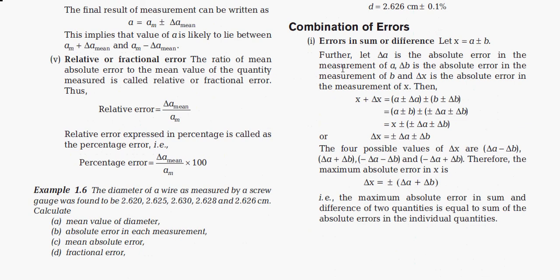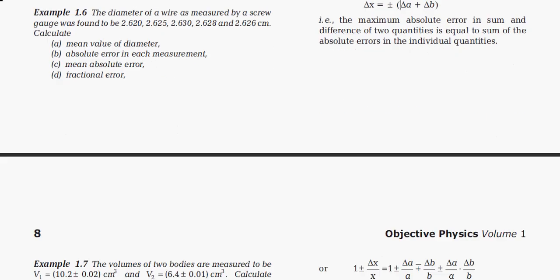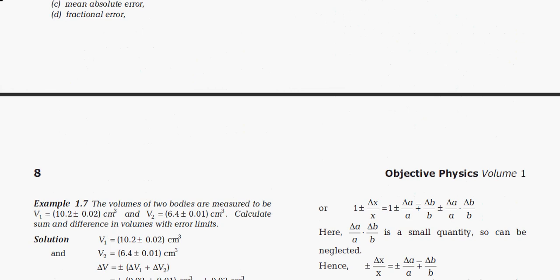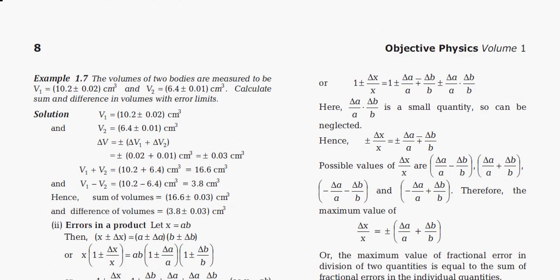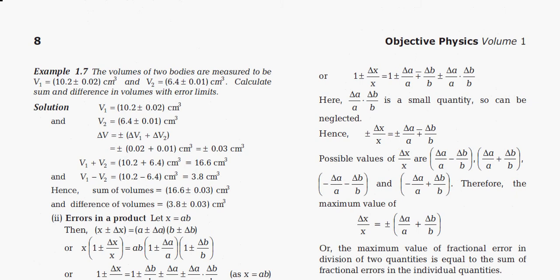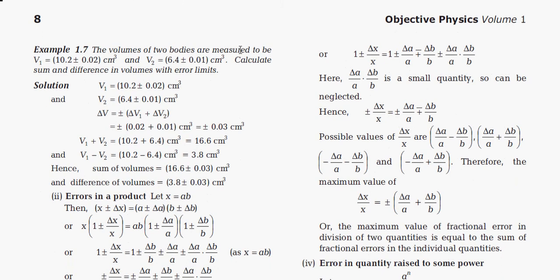Now let's talk about the combination of errors. First, error in a sum or difference: if x = a ± b, the rule is that the absolute error in x equals Δa + Δb — that is, we always add the individual absolute errors. This relation holds for both addition and subtraction: Δx = Δa + Δb.